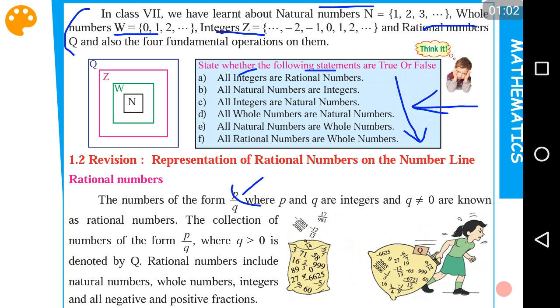Here you have Q which includes the fractions, and you have Z, that is integers with negative numbers, and you have W, that is whole numbers. It includes 0 and natural numbers, which are only positive numbers.